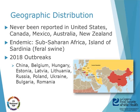ASF virus has never been reported in the United States, Canada, Mexico, Australia, or New Zealand. It is endemic in sub-Saharan Africa, the island of Sardinia, and in feral swine. Looking at the map, there have been several outbreaks this year. China first reported ASF in domestic swine in August 2018, and Belgium recently reported it in their wild boar populations in September of this year. Many other countries have also had ASF outbreaks.